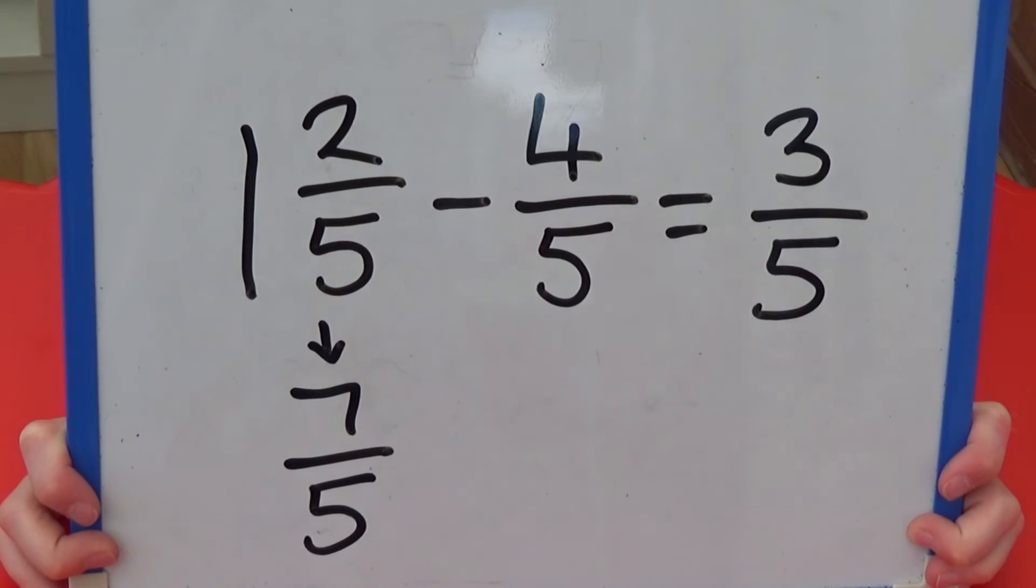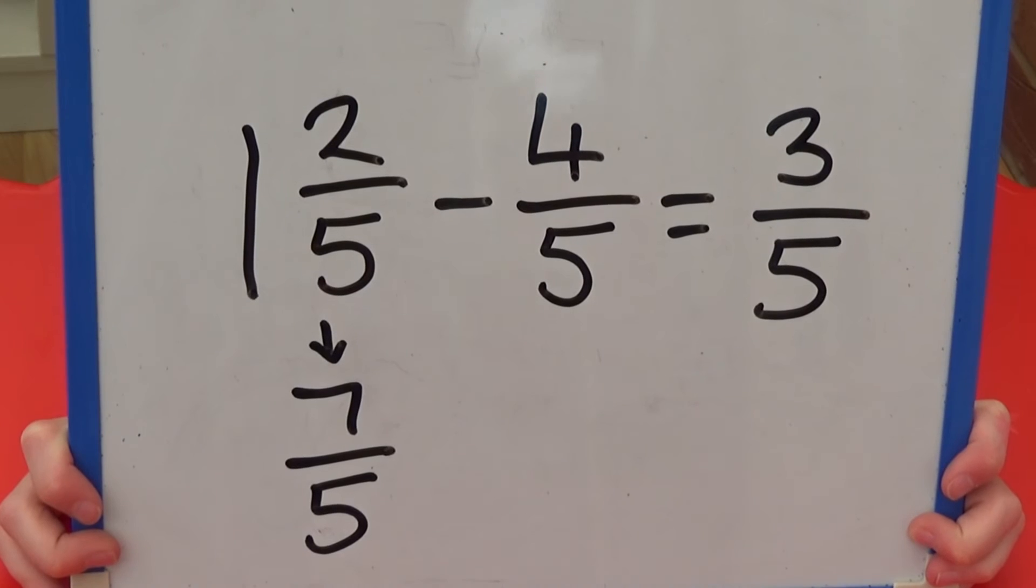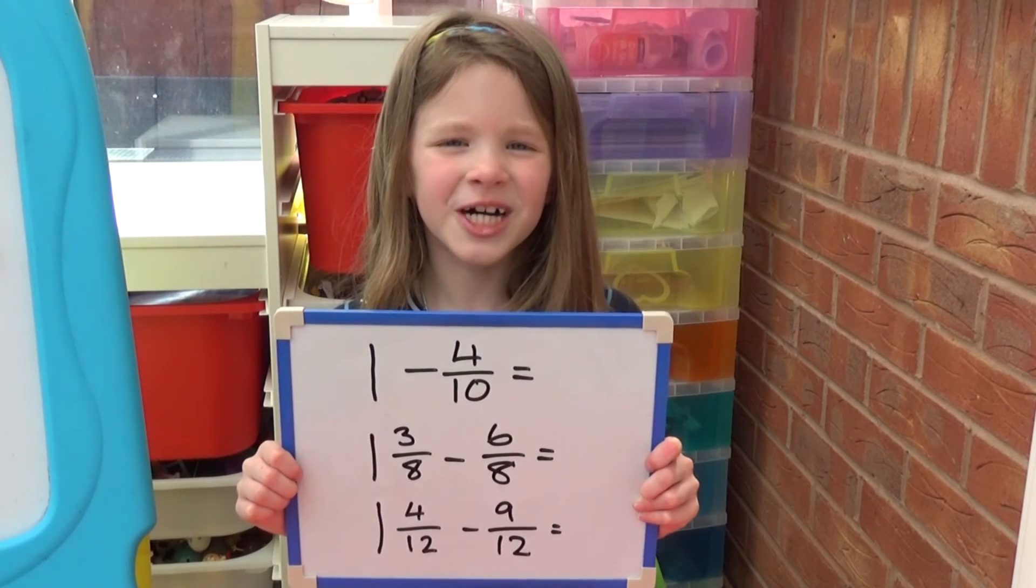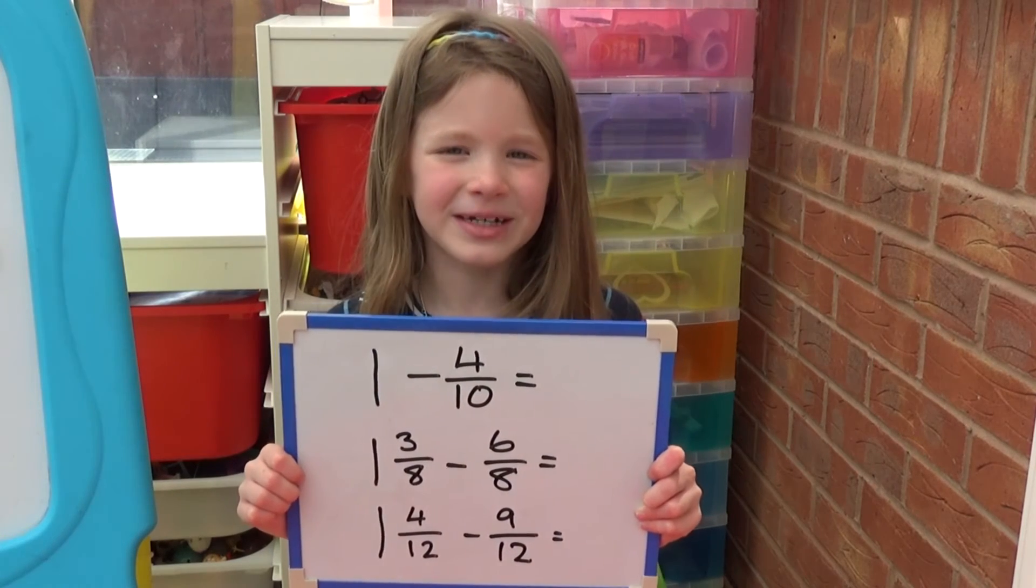So one and two fifths is the same as seven fifths. Take away four fifths and we are left with three fifths. Why don't you pause the video and have a go at some yourself.